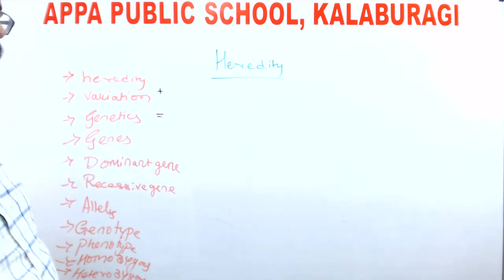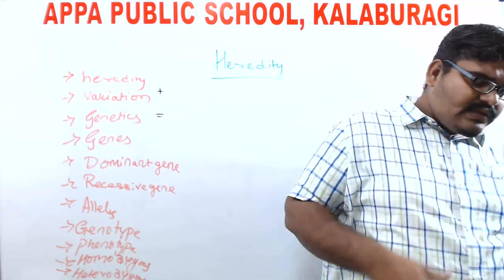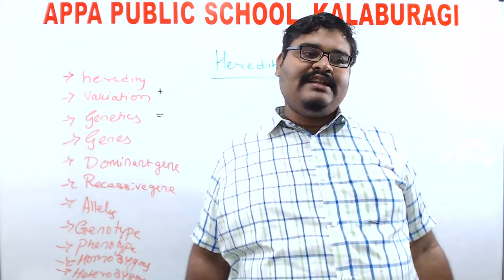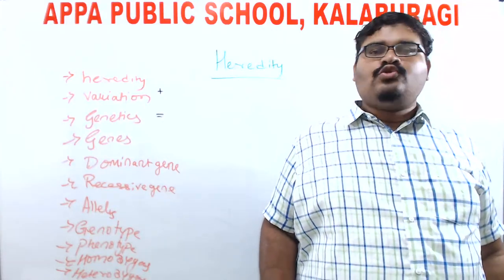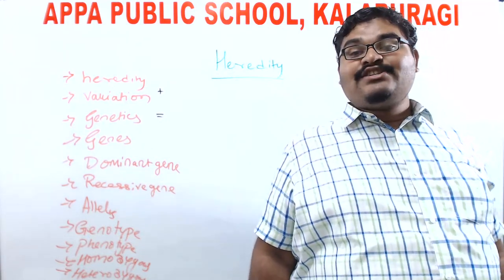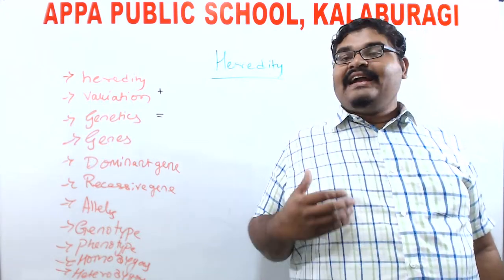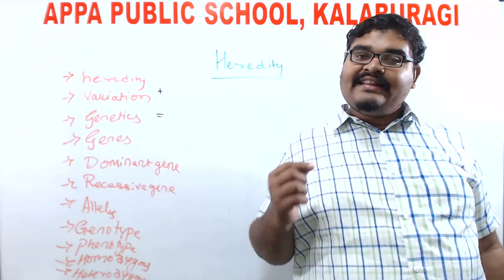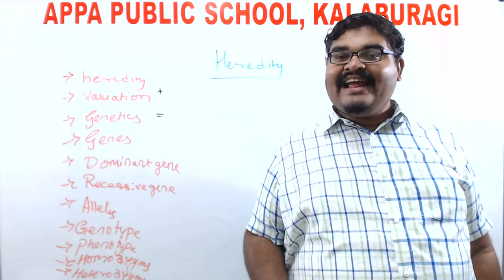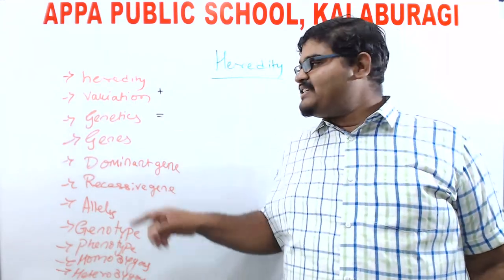What do you mean by a gene? Before knowing the definition, let us understand where genes are. Characters are transferred from one generation to another through reproduction. During reproduction, gametes or sex cells fuse. These cells have a nucleus, which contains chromatin material coiled into chromosomes. Inside chromosomes, we have the double helical structure of DNA, and in that DNA, we have small segments or sections — those are nothing but genes.